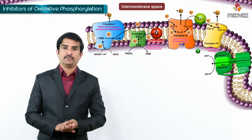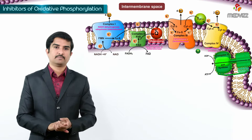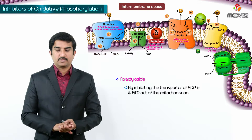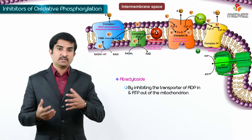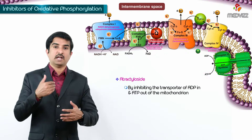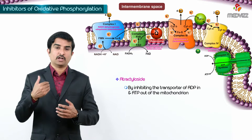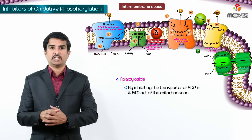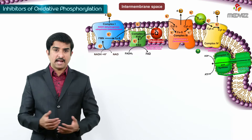Now, the inhibitors of oxidative phosphorylation — the ATP synthase Complex V. Atractyloside is an important inhibitor; it blocks the transport of ADP into and ATP out of the mitochondria. The resulting increased concentration of ATP inside the matrix blocks oxidative phosphorylation.